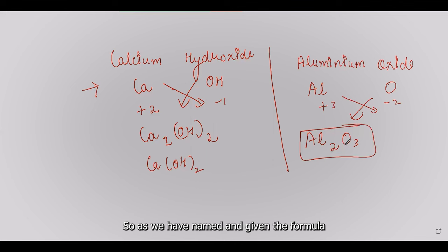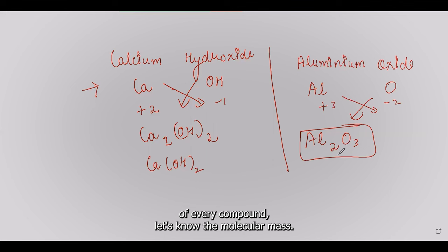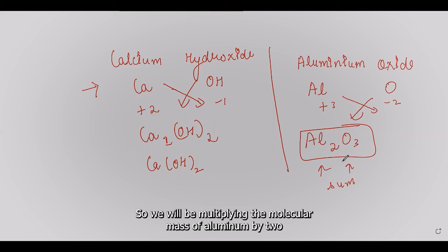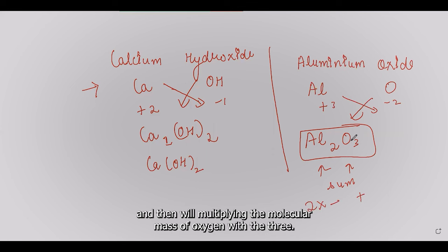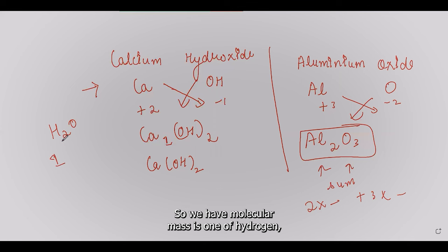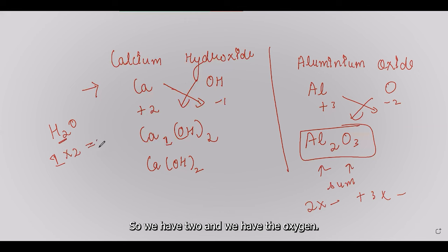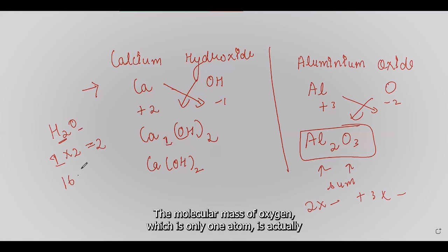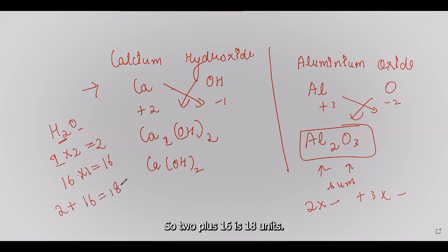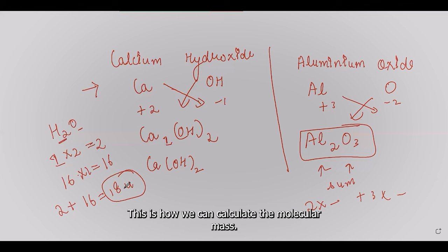Now let's calculate molecular mass — the sum of atomic masses of all atoms in a molecule. For Al₂O₃: (atomic mass of Al × 2) + (atomic mass of O × 3). For H₂O: hydrogen atomic mass is 1, with two atoms = 2; oxygen atomic mass is 16, with one atom = 16. Total: 2 + 16 = 18 units. That is the molecular mass of water.